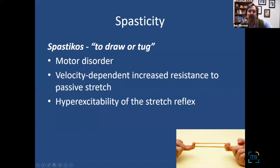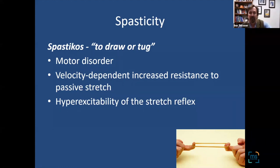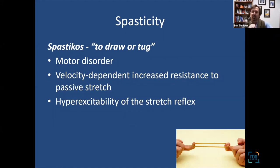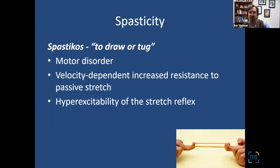It's kind of an interesting topic because sometimes it's a little bit hard to describe. The actual term spasticity comes from an old Greek term spasticos, which means to pull or tug, kind of like stretching out a rubber band. The scientific definition is a velocity-dependent increase in resistance to passive stretch. So if I were to move someone's arm slowly, I might not feel that tightness, but if I were to suddenly pull vigorously and quickly, I'll feel that muscle tighten up and resist that motion. It's a hyper-excitability of the stretch reflex.